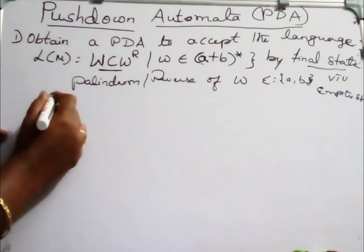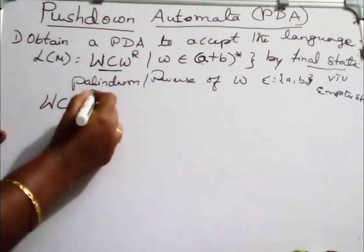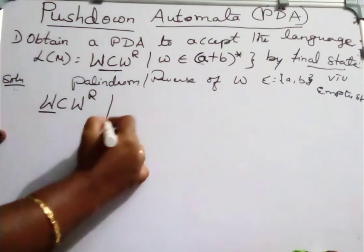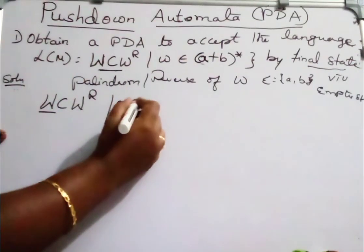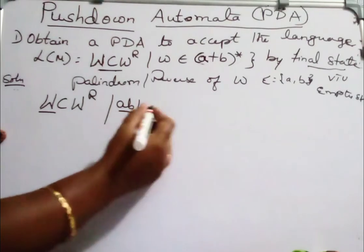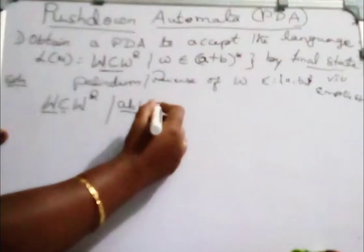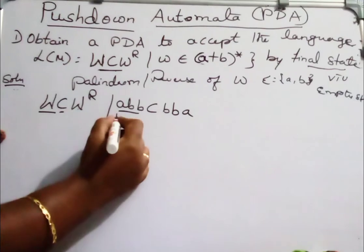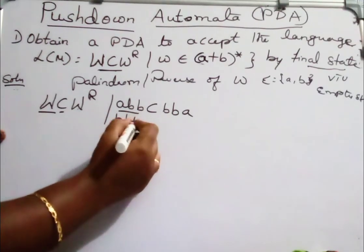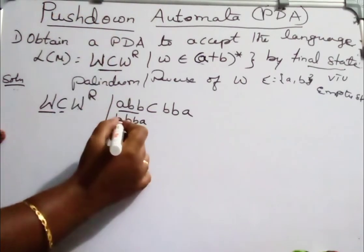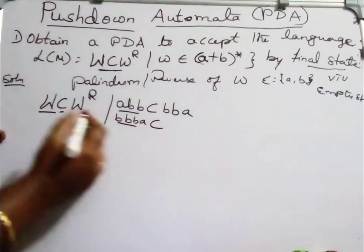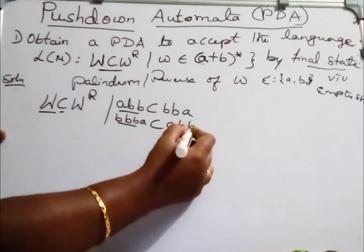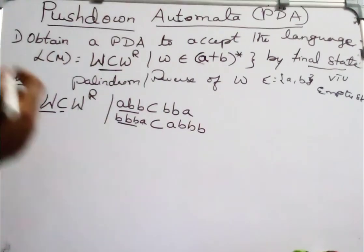Consider the string WCW^R. The string W can be anything — a combination of A's and B's. For example, if W is ABB, then reverse of W, that is W^R, will be BBA. You have a gateway symbol C in between. Suppose if my string is beginning with B, something like BBB, then it will have a gateway C, and reverse of W would be ABB.